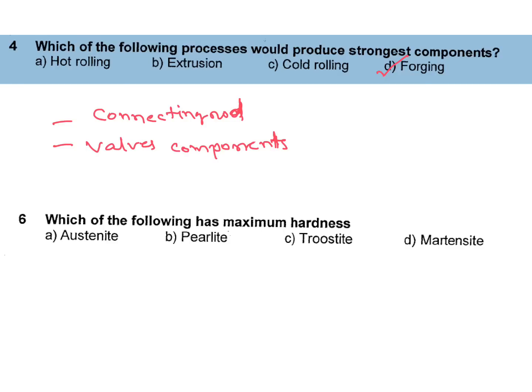Which of the following has maximum hardness? a) Austenite, b) Pearlite, c) Troostite, d) Martensite. Its answer is Martensite.